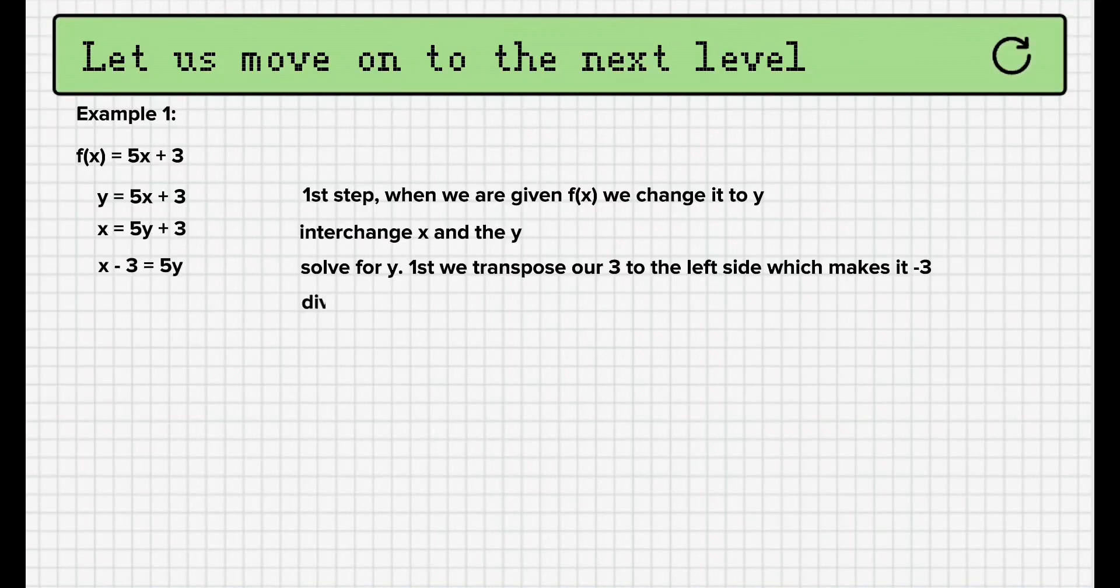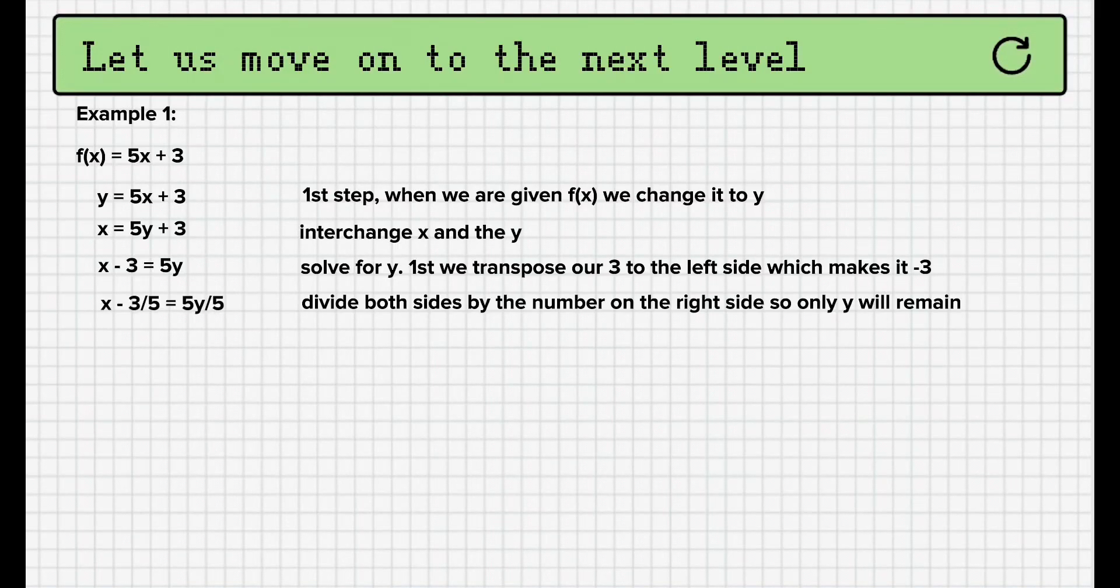After transposing, we divide both sides by the number on the right side, so only y will remain. So, (x - 3)/5 = y.